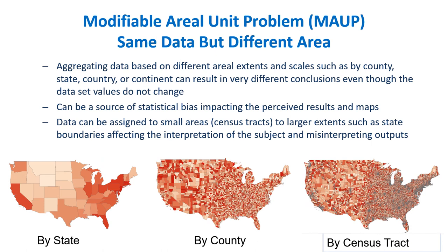This is a visual example of the modifiable area unit problem — the same exact data but shown at different extents and scales. On the left it's by state, in the middle it's by county, and on the right it's by census tract. Each of these can give the person visualizing and reviewing the data a very different impression of what the data means.